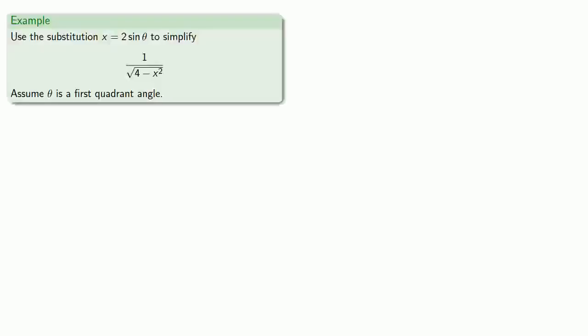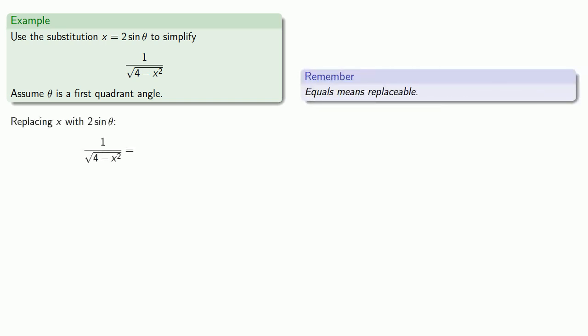For example, use the substitution x equals 2 sine theta to simplify 1 over square root 4 minus x squared, and we'll assume theta is a first quadrant angle. So remember equals means replaceable, so we'll replace x with 2 sine theta and simplify.